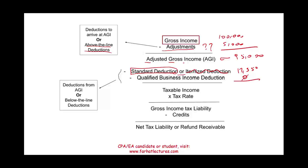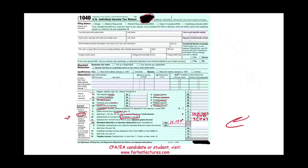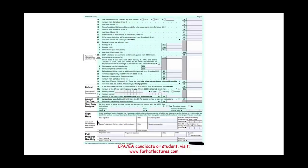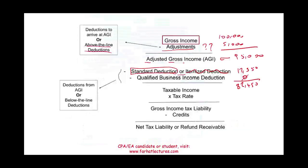Now I need my calculator to figure out taxable income. I have $95,000 AGI minus $12,550 standard deduction, which gives me taxable income of $82,450. Now let me show you on the form — here is taxable income: $82,450. Now I'm going to go from taxable income and compute my tax.